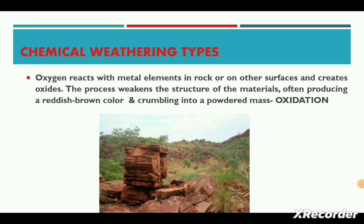When a rock is exposed to the atmosphere, the atmospheric oxygen present in rainwater enters into chemical union with its constituent minerals, especially iron compounds. This results in the decomposition of the rock, leading to its crumbling into a powdered mass. This process is termed oxidation. During oxidation, the original color of the rock changes to red, yellow, or brown — a process comparable to the rusting of iron.